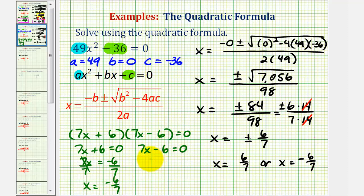And over here we would add six to both sides, divide by seven. We have our second solution of x equals six-sevenths.